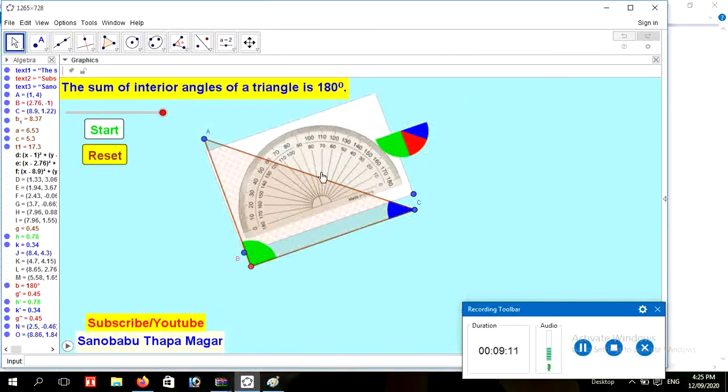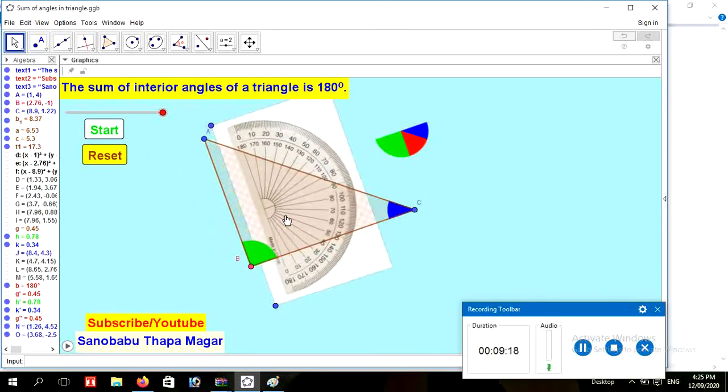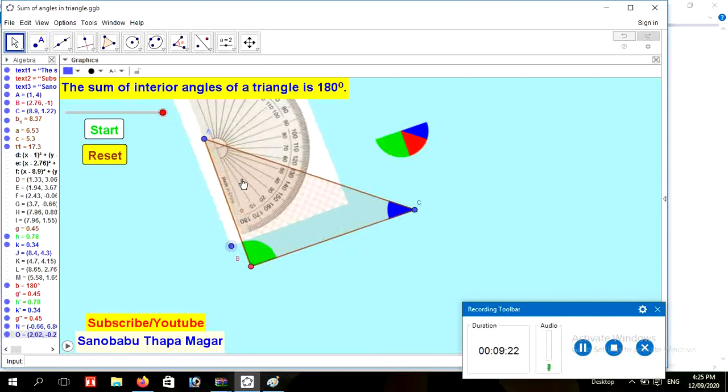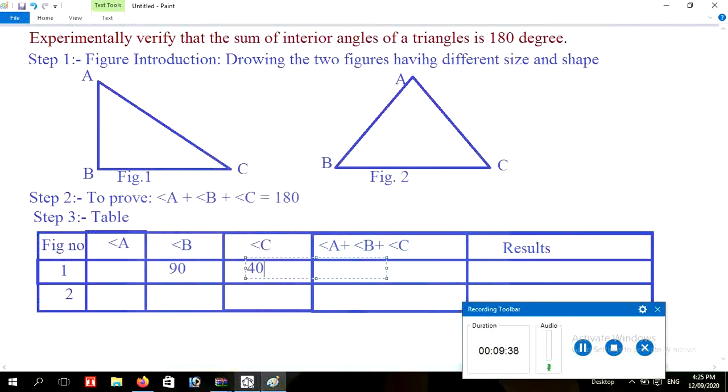Again I am going to measure angle A, and angle A represents 50 degrees. So the measure of angle A is 50 degrees. And write here 50. And sum: 50 plus 90 plus 40 equals to 180.